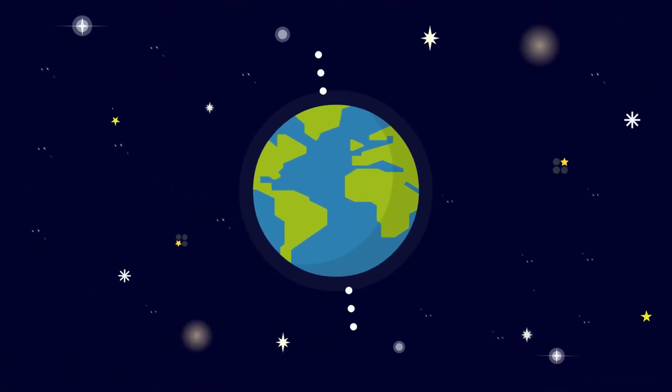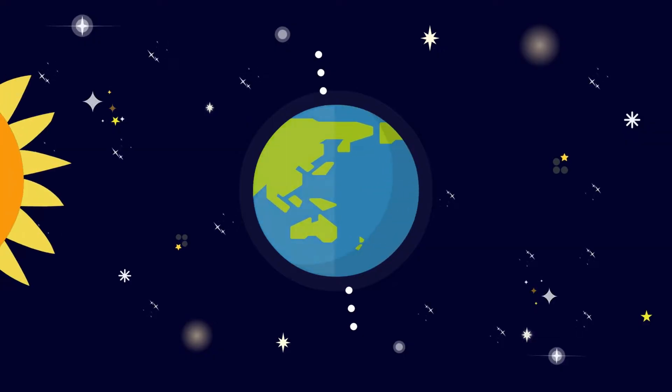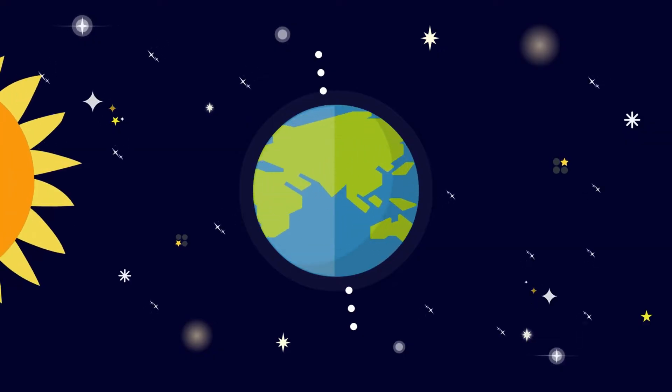As the Earth is continuously rotating on its tilted axis, half of the Earth is exposed to rays from the sun, while the other half is in darkness, which causes day and night.